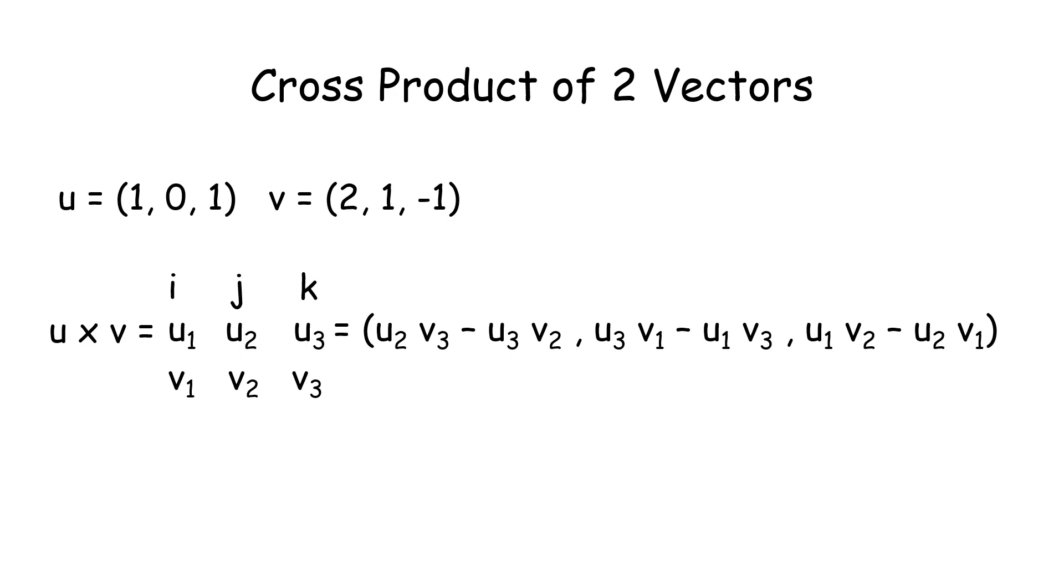So we have i, j, and k, u1, u2, u3, v1, v2, v3, is given to us as u2 times v3 minus u3 times v2, that's the first section.